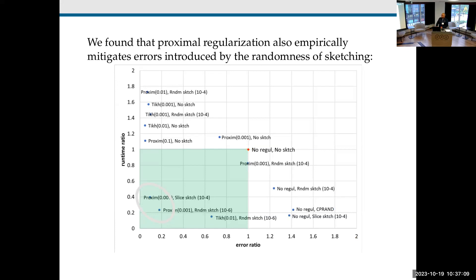Here we're plotting on the y-axis the runtime ratio of various algorithms, and on the x-axis the error ratio of various algorithms. The red point in the middle is when you're just doing CPD-ALS with no regularization and no sketching. The shaded area is where your algorithm is doing better than ALS because its error ratio to ALS is lower and it's faster — and those are the two things we want to get from sketching.